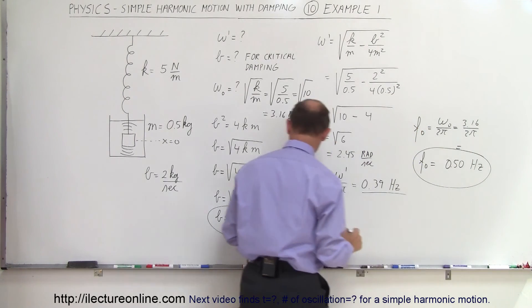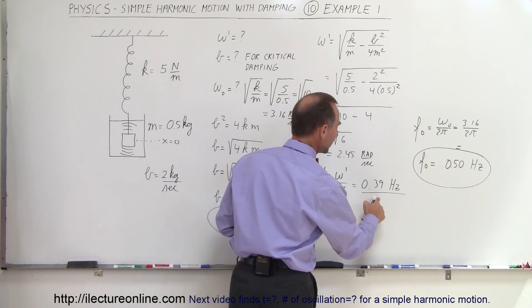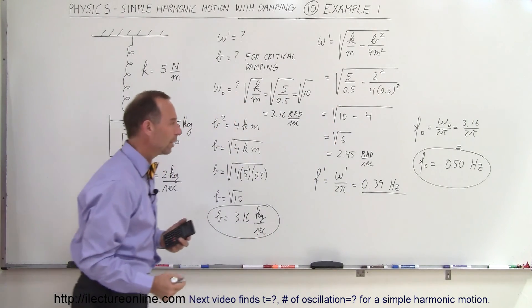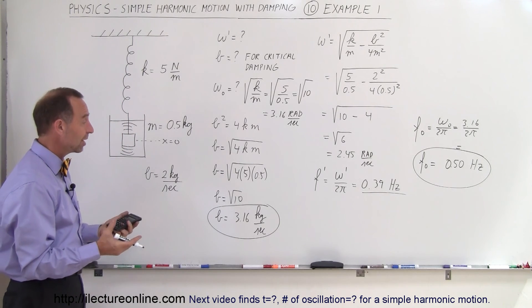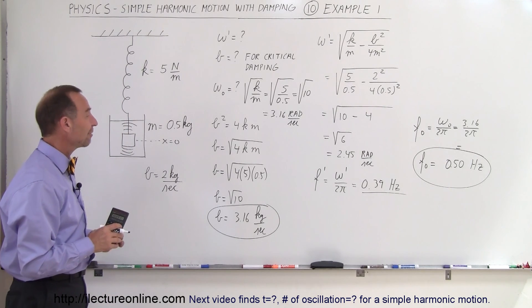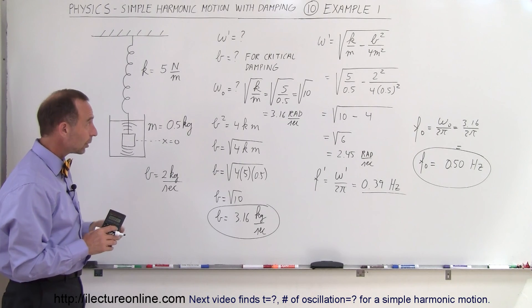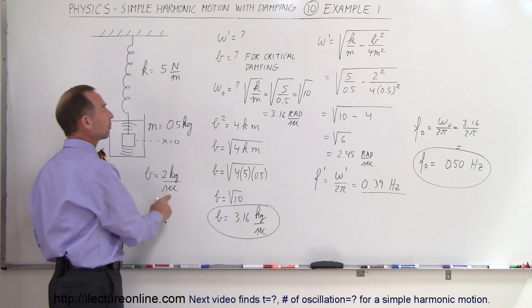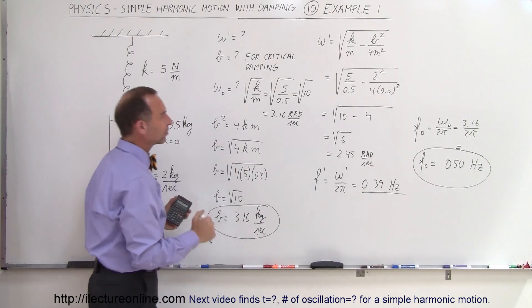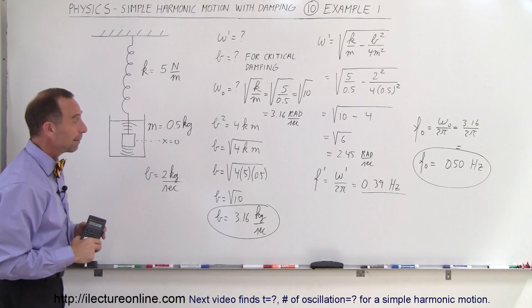As you can see, the difference from 0.39 with damping to 0.5 without the damping. And that's how you do a problem like that. That's how you find the frequency and the damping factor required to have critical damping. So, if b is equal to 2 kilograms per second, we'd have to kind of increase it by about 50 or 60 percent to get to critical damping.